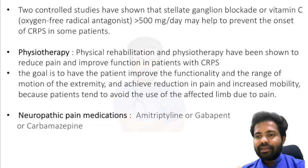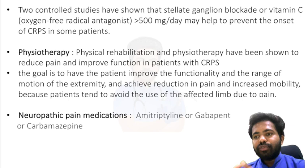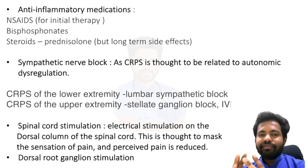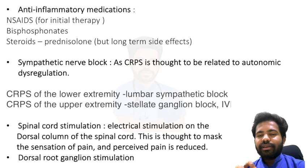Physical rehabilitation and physiotherapy have been shown to reduce pain and improve function in CRPS patients. The goal is to improve functionality and range of motion of the extremity and achieve pain reduction and increased mobility, since patients tend to avoid using the affected limb. Neuropathic medications include amitriptyline, gabapentin, and carbamazepine. Anti-inflammatory medications — NSAIDs — are more beneficial in the initial days of CRPS, along with bisphosphonates and steroids like methylprednisolone, though long-term steroid use has side effects.